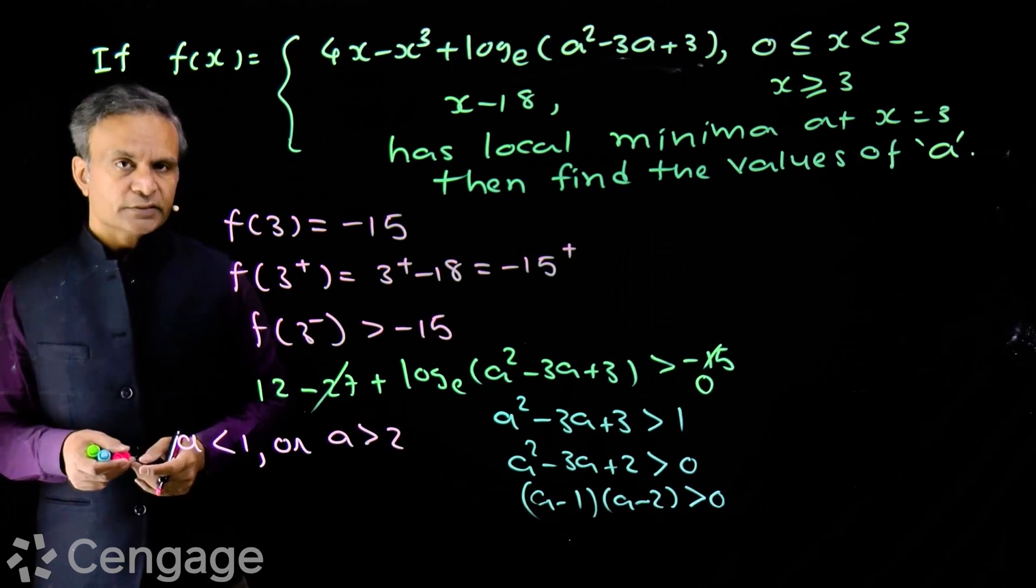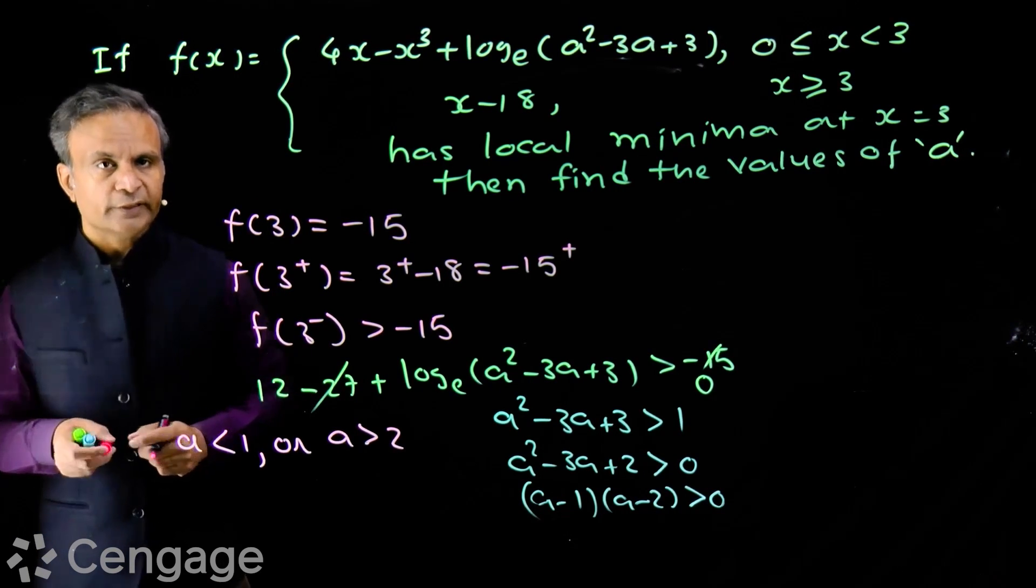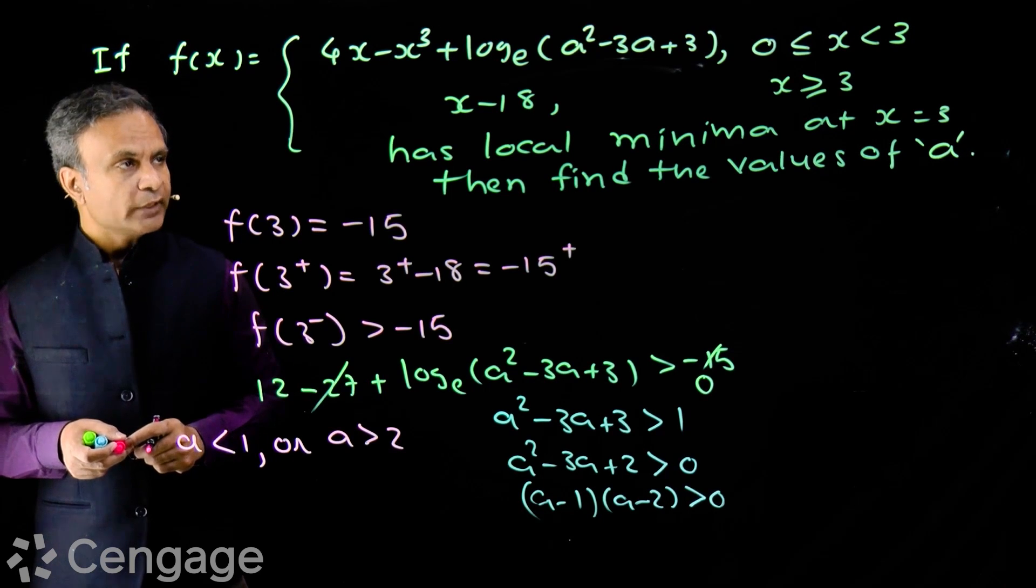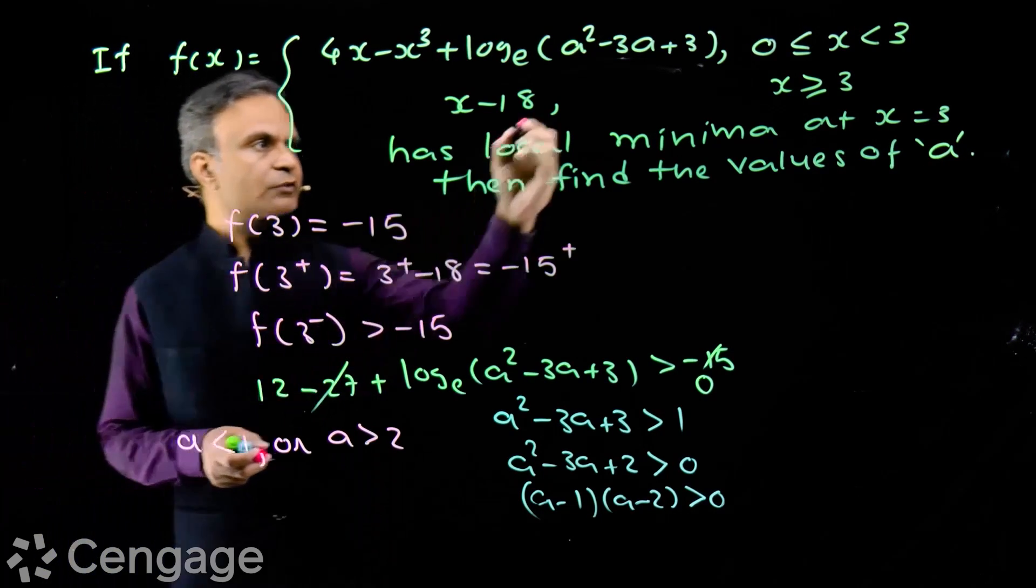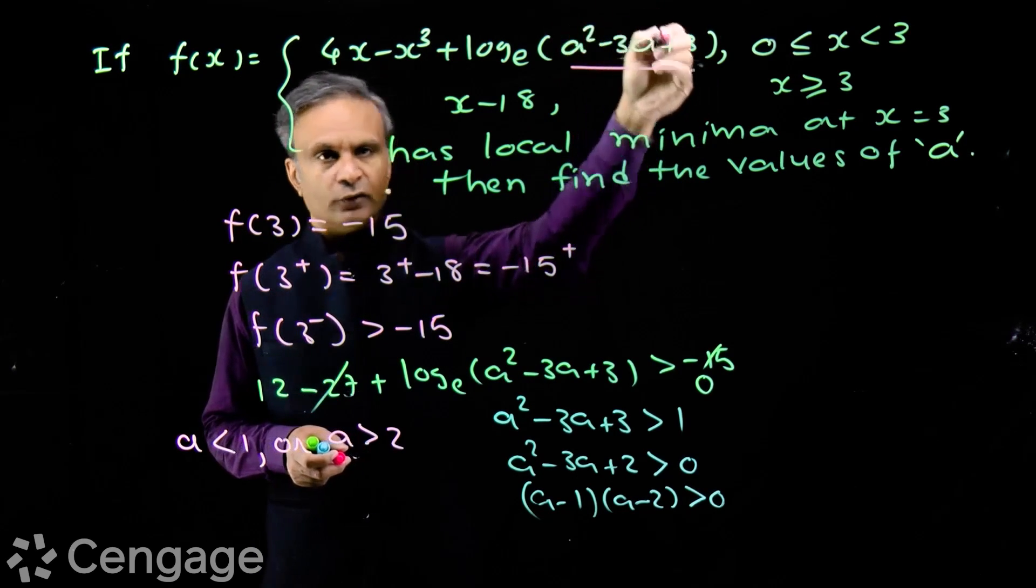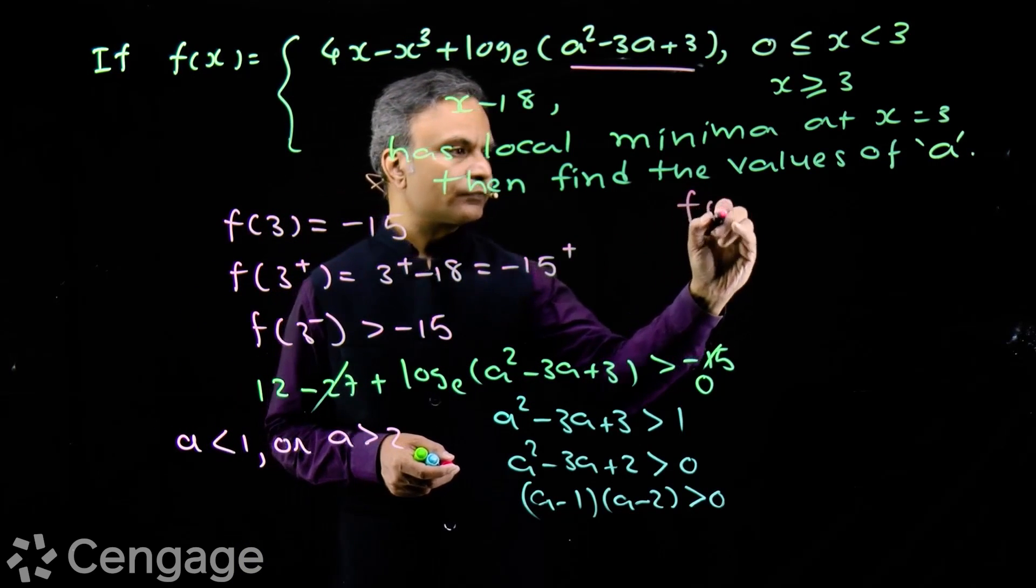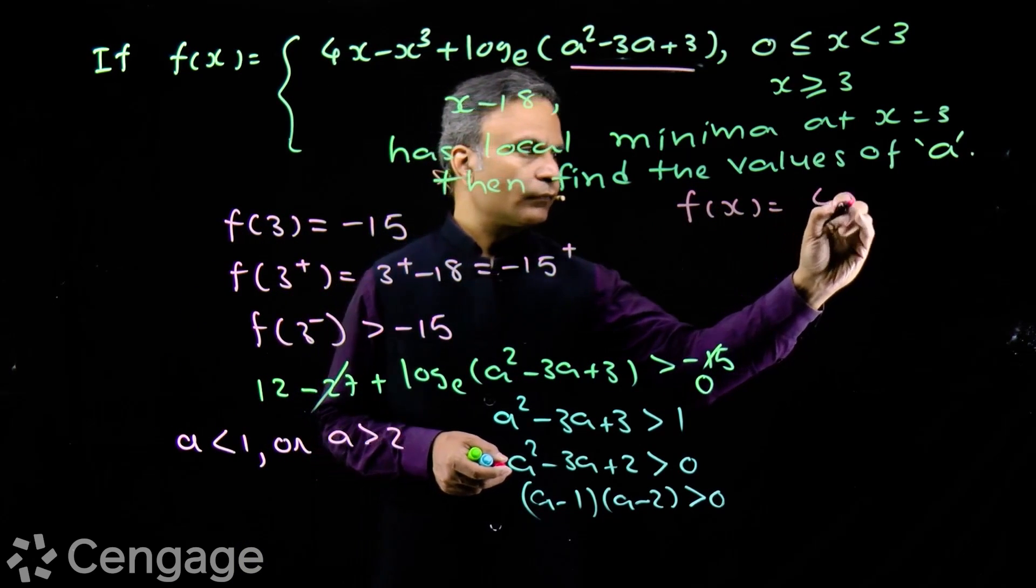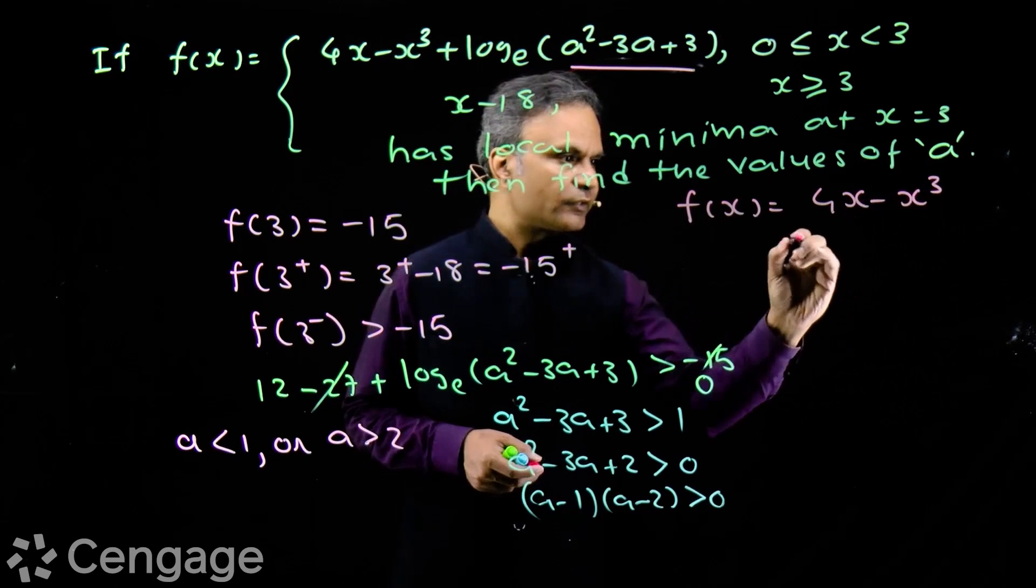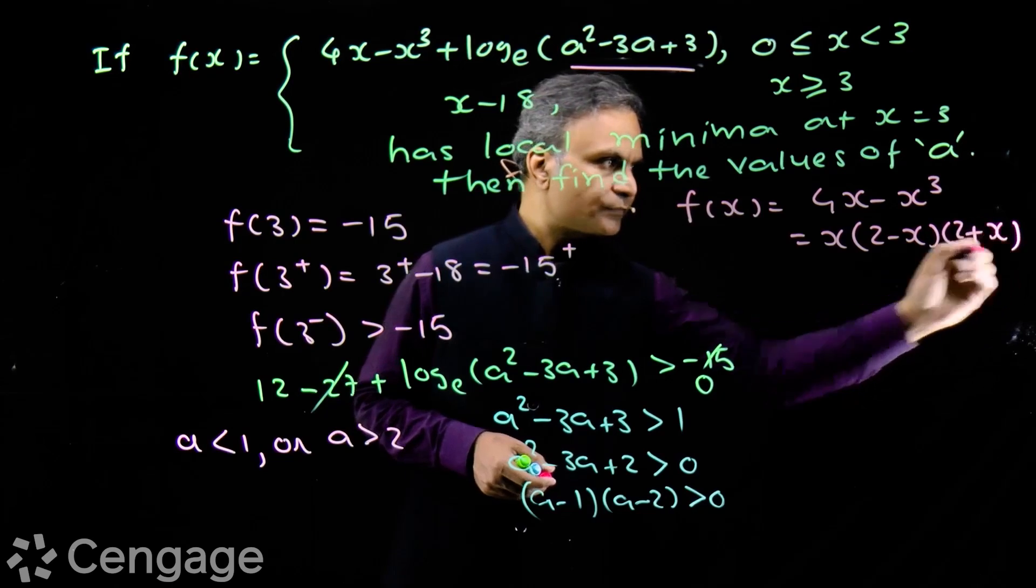Now what will be the case if we take a equals 1 or 2? For a equals 1 and 2, this expression is 1, and log 1 is 0. So we will have branch function 4x minus x cube. This is x into 2 minus x into 2 plus x.